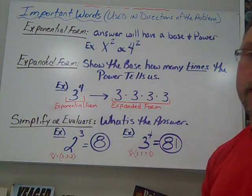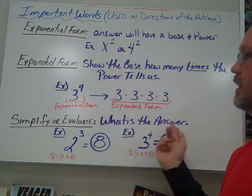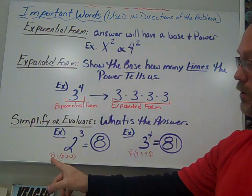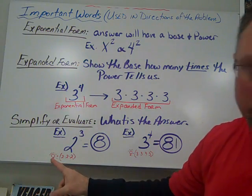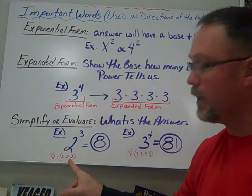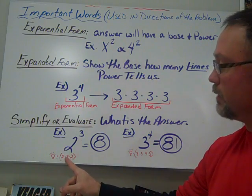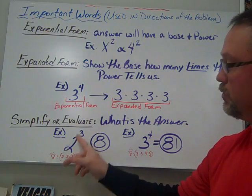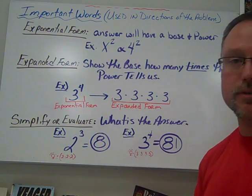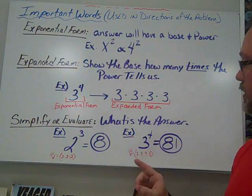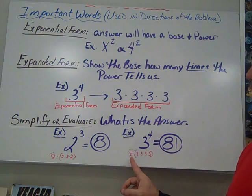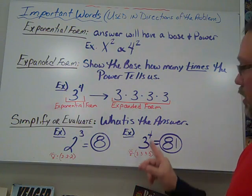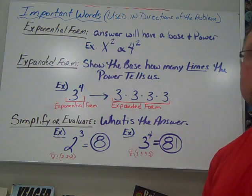Simplify or evaluate. Basically, what is the answer? So example, two cubed, you're going to think with the little light bulb there, if you see this, that's kind of what you think in your head. Or if you want to write it down, that's up to you. Two times two times two gives us eight. So two cubed is eight.